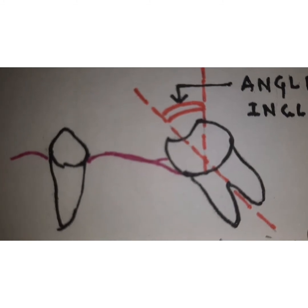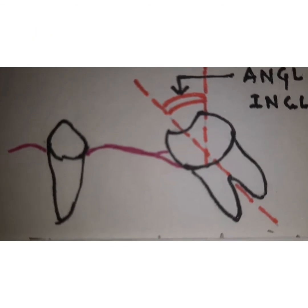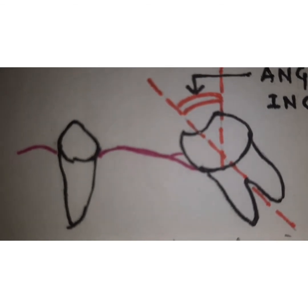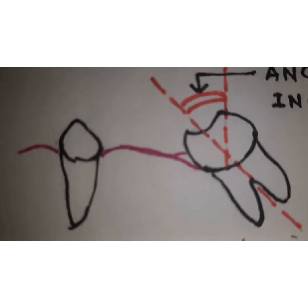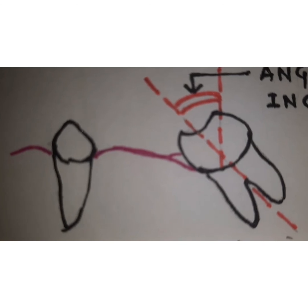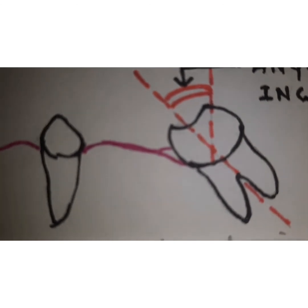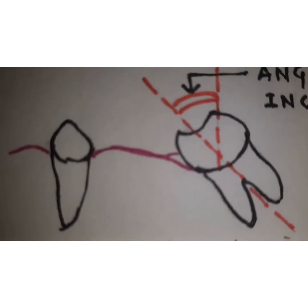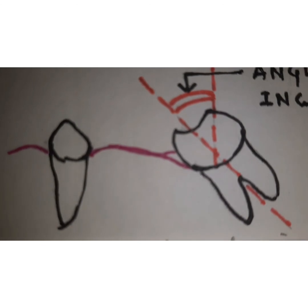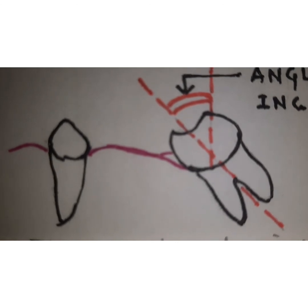Another factor is the root surface area, which represents the periodontal area. Whenever evaluating root surface area, the abutment teeth should follow Ante's Law. According to Ante's Law, the total periodontal surface area of the abutment teeth should be greater than or equal to the periodontal surface area of the teeth to be replaced. Ante's Law is used as a clinical guideline to select an appropriate abutment tooth.